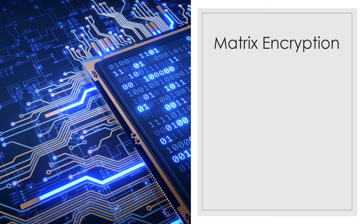For matrix encryption we need two things: one is the encoder matrix and the other one is the decoder matrix. The decoder matrix will be the inverse of the given encoder matrix. The encoder matrix will be given and we have to find the inverse of it to get the decoder matrix.